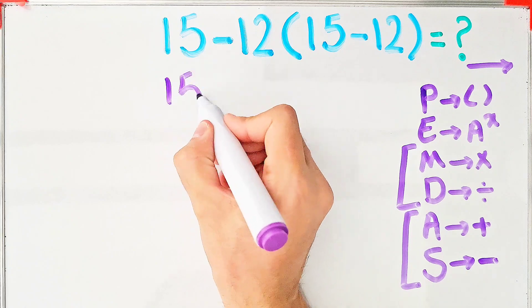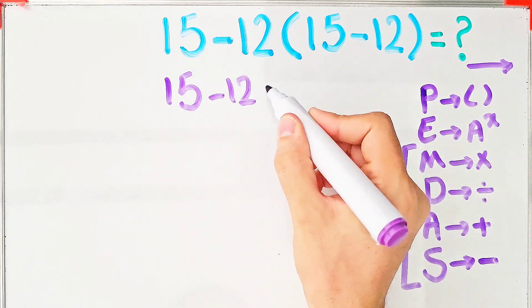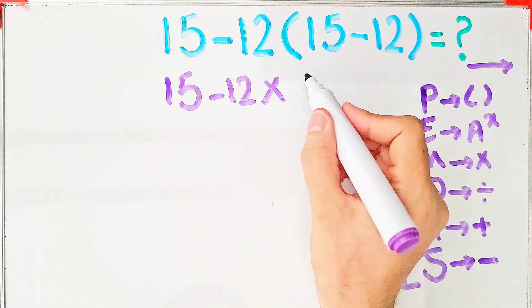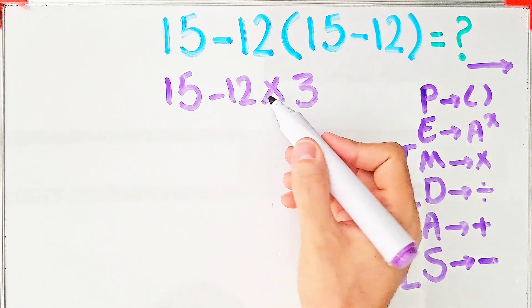According to the PEMDAS rule, first we simplify the parentheses. We have 15 minus 12, then times 3. In this step, we have subtraction and multiplication.